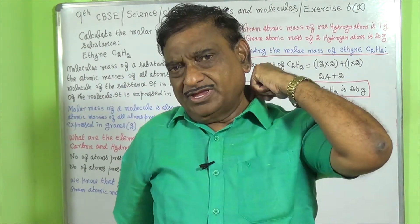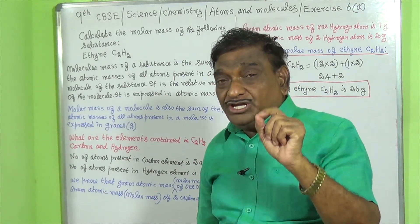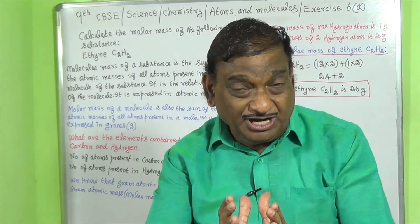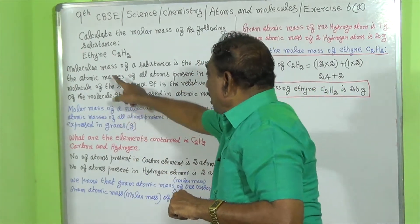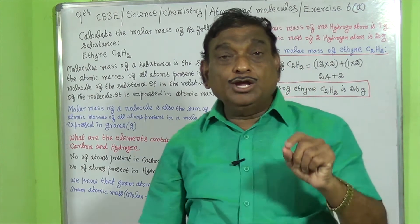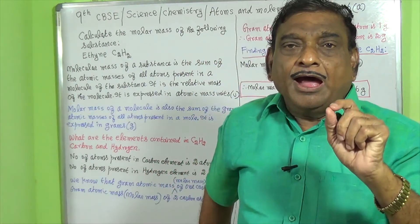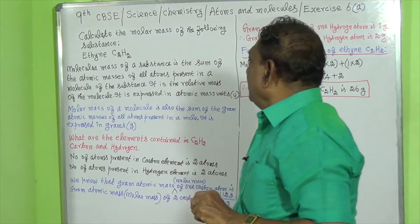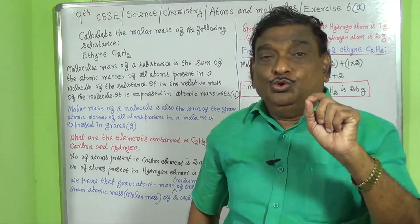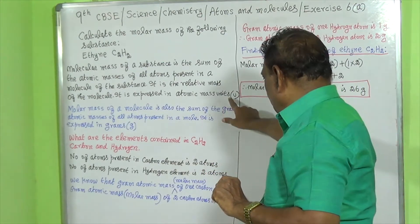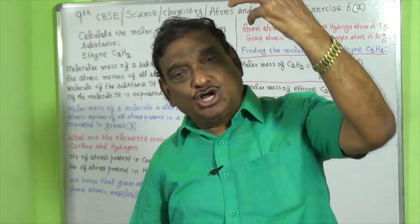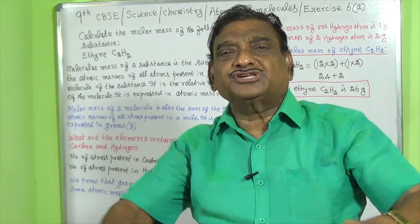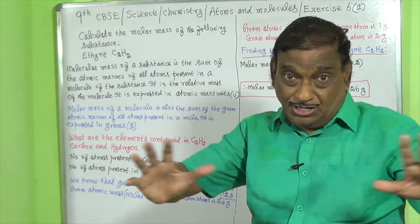First of all, we should know what is molar mass and also we should know what is the difference between the molecular mass and the molar mass. The molecular mass is the sum of the masses of all atoms present in a molecule. It is expressed in the unit atomic mass unit, that is u. In the case of molar mass also, it is the sum of the atomic masses of all atoms present in a molecule — there is no doubt at all in both the cases.